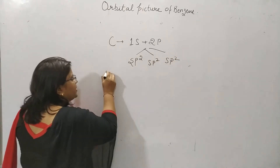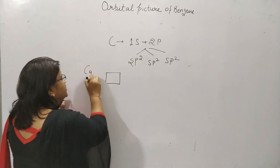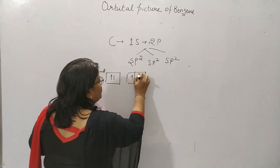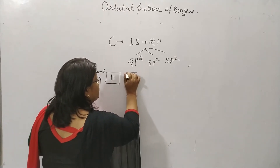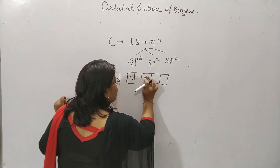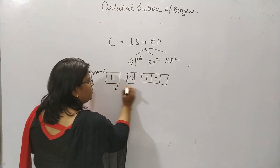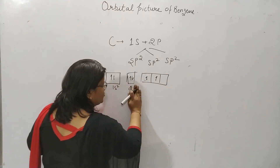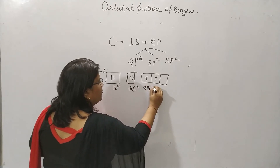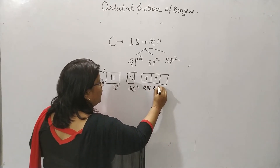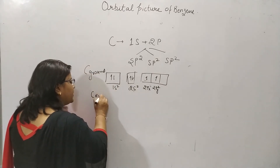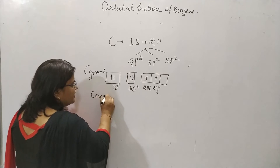Now we will discuss. In the ground state, the carbon has the configuration 1s2, 2s2, and 2p orbitals: 2px1, 2py0, and 2pz0. But in the excited state, the 2s orbital promotes one electron to the 2pz orbital.